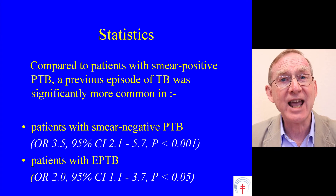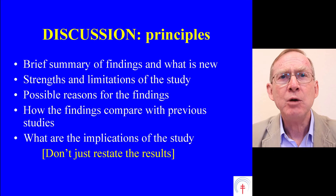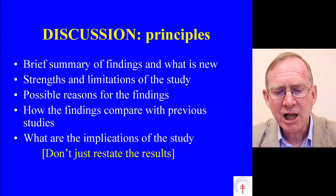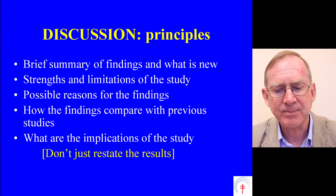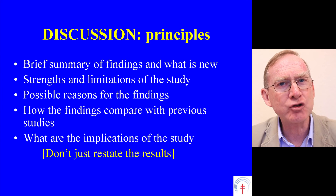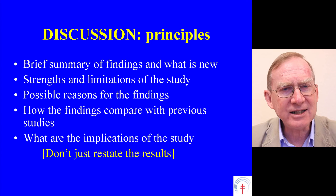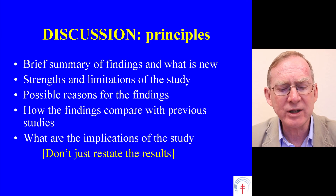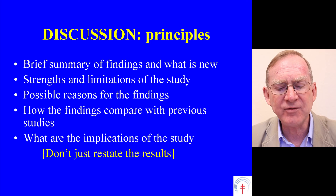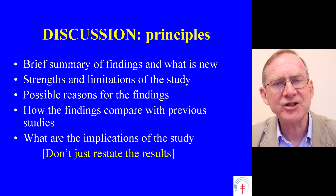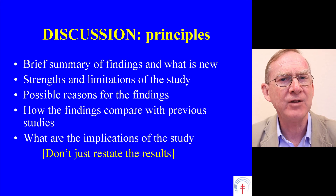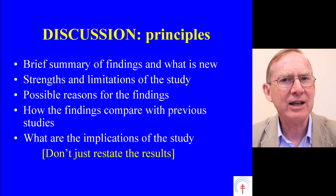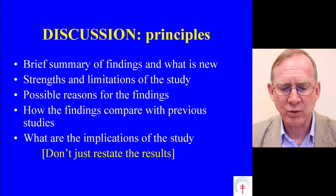That brings us to the end of the results section. We then go on to the discussion. The principles are: we start with a brief summary of the findings and what is new; we then discuss the strengths and limitations of the study; we then discuss the possible reasons for the findings; how the findings compare with other studies previously done; and finally, what are the implications of the study? Some people put the limitations right at the end, but I prefer to have strengths and limitations together in that second paragraph.